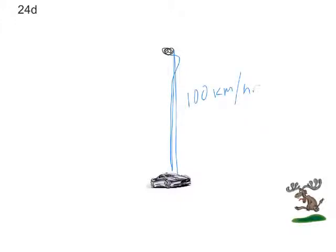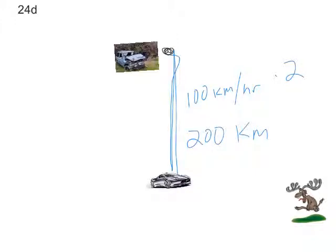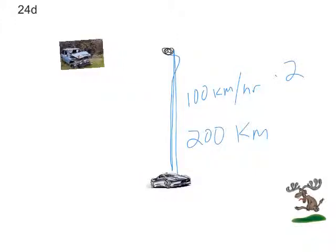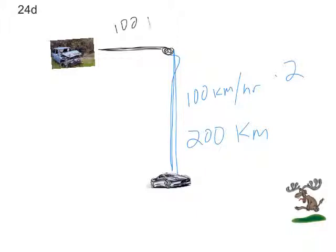24D. We've got two cars that start moving from the same point. The first car travels south at 100 kilometers per hour. And it does this for a total time of 2 hours. So it went south at 100 kilometers per hour for 2 hours. So it's traveled a total distance of 200 kilometers. The second car, being a junker, was only able to travel at 50 kilometers per hour for a total time of 2 hours. So it traveled a distance of 100 kilometers. And they ask, how far apart are they?